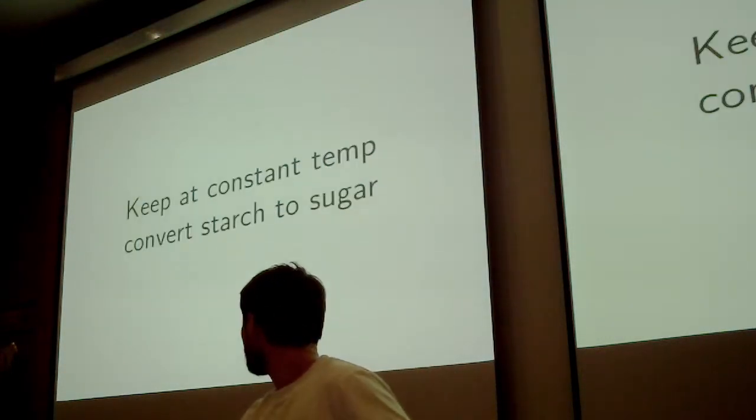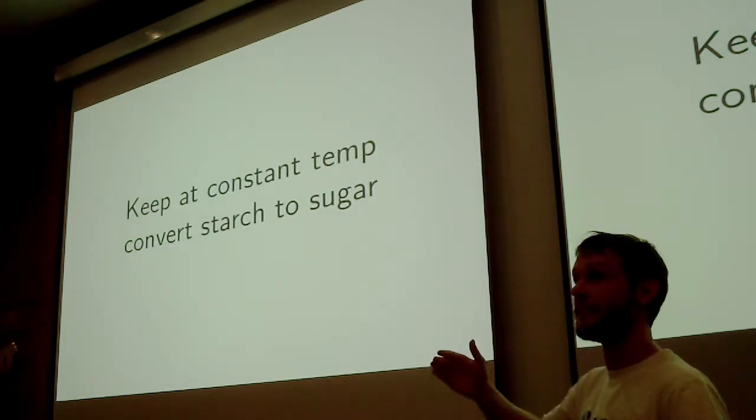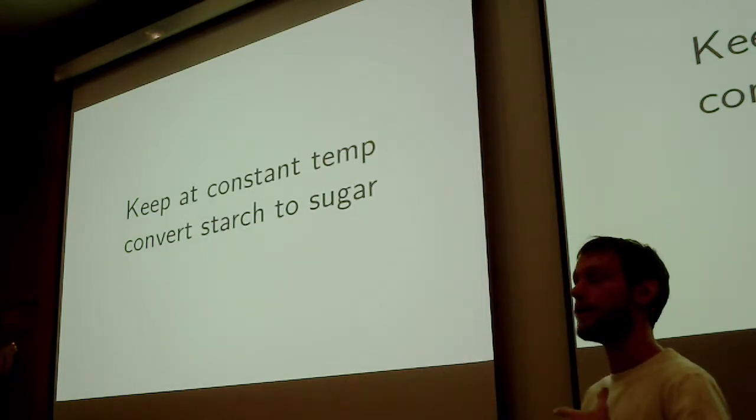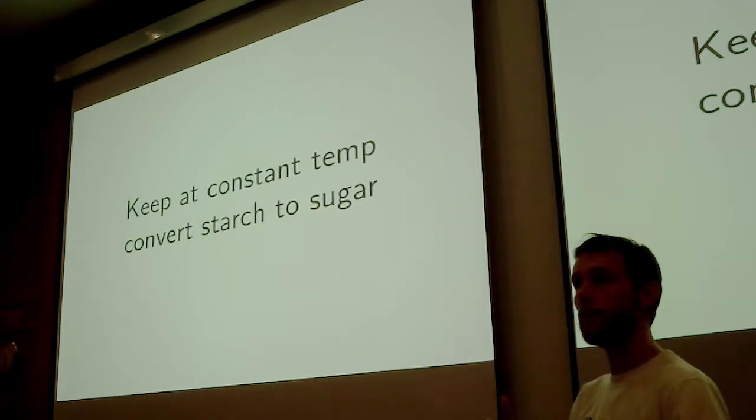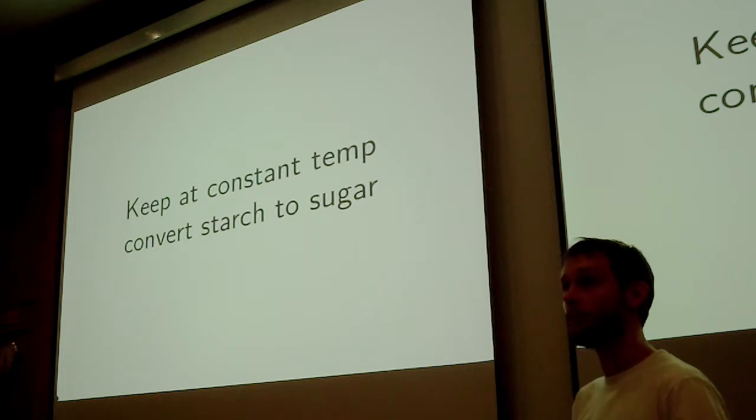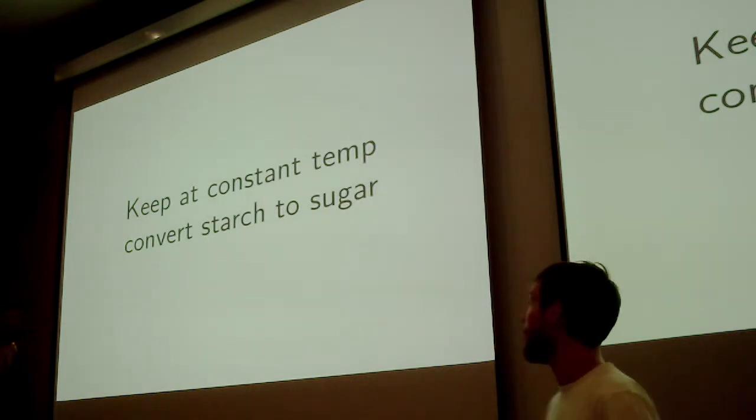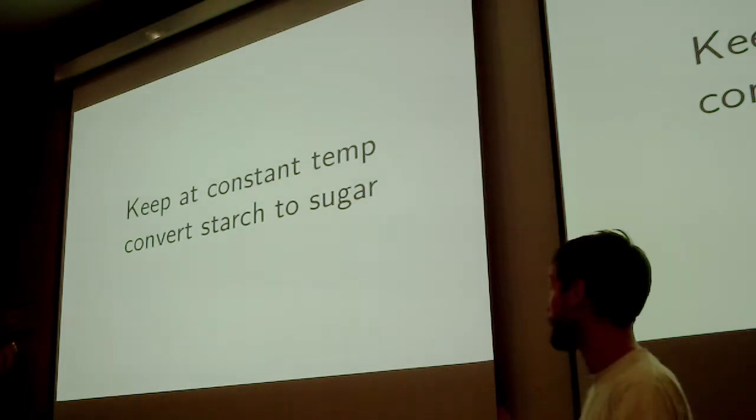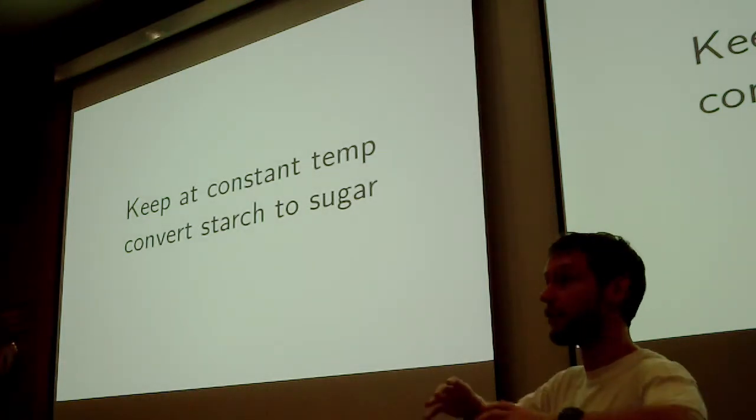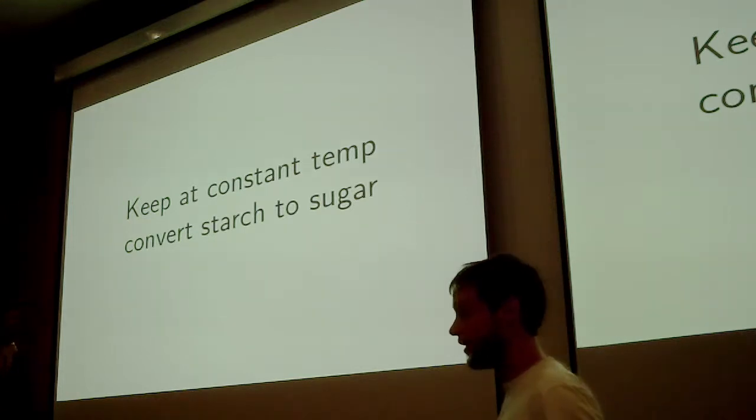So the mashing process we keep them constant at 64 to 72 degrees. The temperature determines what type of sugars you get out. So the lower temperatures 64 you get out short grain sugars which the yeast find easy to eat. So then you get a drier beer in the end which is what mostly pilsners are made at about 64. But if you drink things like English beers or stouts they might have a sweet finish and that will be due to them being mashed at a higher temperature. Because the yeast cannot convert all their sugars then in the wort into alcohol so it will end up being a bit sweeter in the finish.